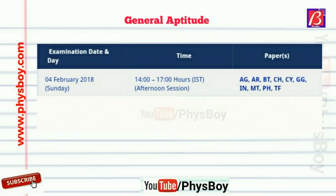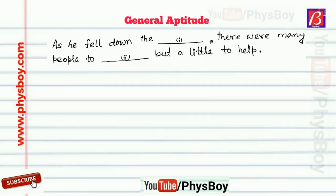The first general aptitude question was: 'As he fell down the dash, there are many people to dash, but a little to help.' We have to choose the appropriate word pair from the given alternatives.